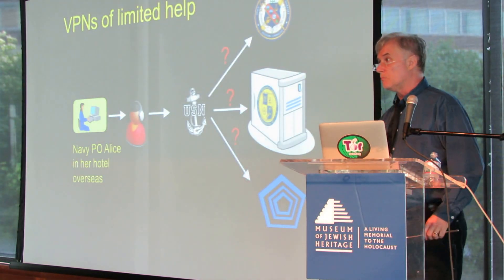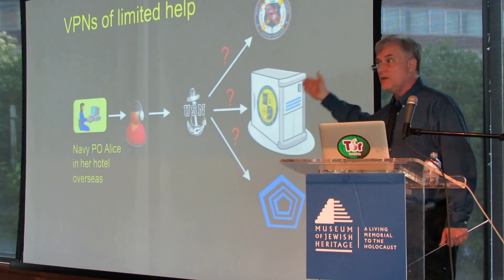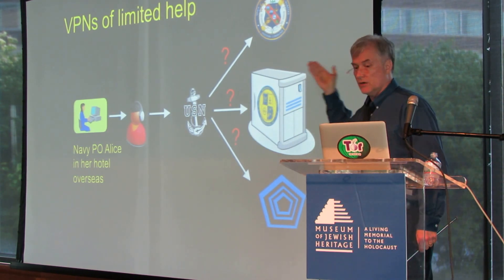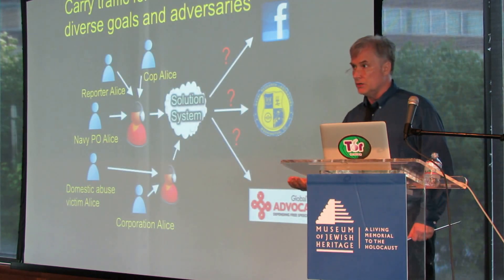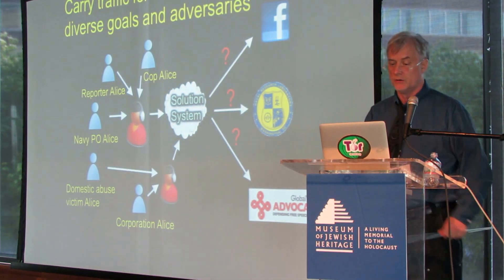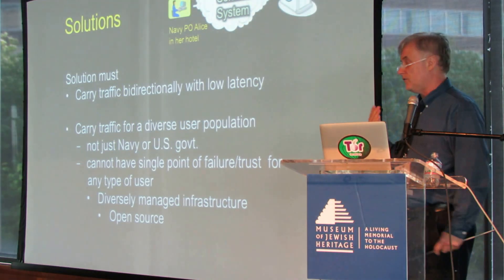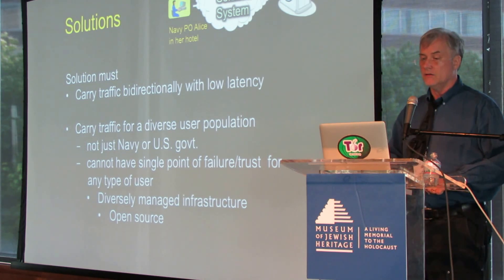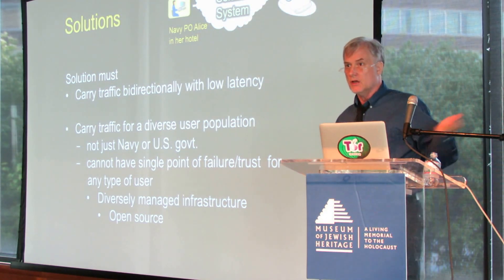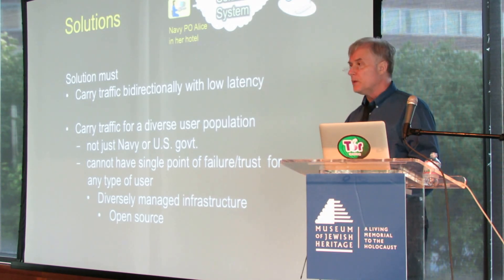You can use a VPN, but that's only going to be a limited solution, because it might identify the particular naval command she's connecting to. And if it's a VPN that belongs to the Navy or a U.S. government VPN, then by merely connecting to it she's still identifying herself as part of the Navy. So what we want is a solution that carries traffic for diverse groups of people — with diverse interests, diverse trust, and diverse ideas of adversaries. The solution has to be practical: low latency and bidirectional. And because it carries traffic for other people with diverse trust, you can't just have a Navy infrastructure — they're not all going to trust the Navy. So you have to let other people run parts of the infrastructure.